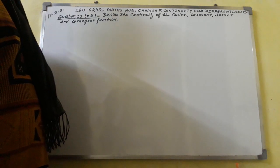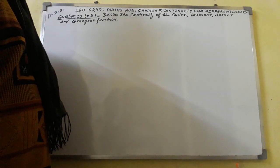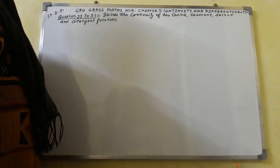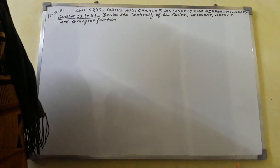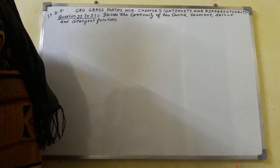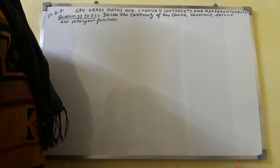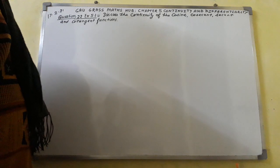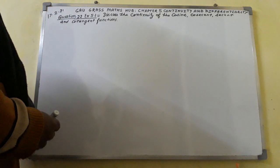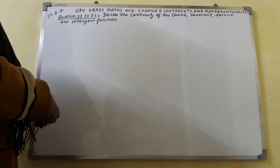I am from Gavgras Maths Hub. I am going to discuss question number 22 that has been taken from exercise 5.1, chapter 5, Continuity and Differentiability. The question is: discuss the continuity of the cosine, cosecant, secant, and cotangent functions. Here I shall write the solution.